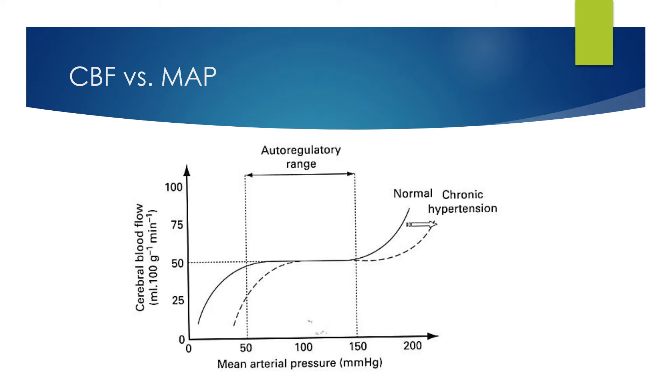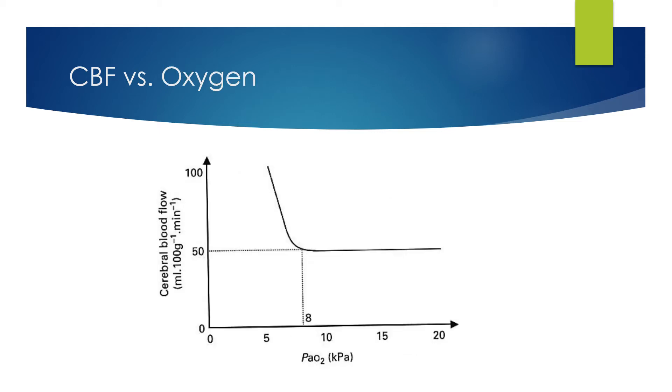But this curve can shift. Chronic poorly controlled hypertension can lead to the whole curve shifting to the right, and so blood flow regulation will occur at considerably higher pressures than we may be expecting. Cerebral blood flow is also autoregulated...